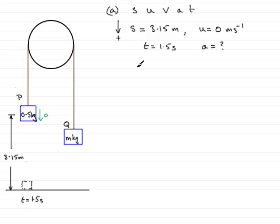So the equation that I'm going to use that connects these together is s equals ut plus a half at squared. Now, s we know is 3.15, so we've got therefore 3.15 equals u, which is 0, 0 times t, 0 times 1.5 here, that's going to be 0.